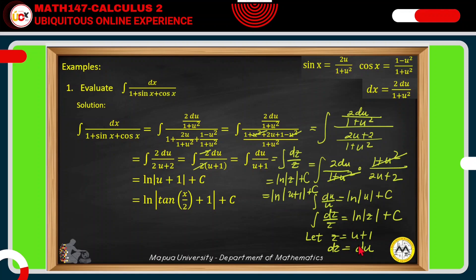We have the natural log of u plus 1 plus C. Recalling that u equals tangent of x over 2, we replace u to get: the natural log of the absolute value of tangent of x over 2 plus 1, plus C. This is the final answer for the integral of dx over 1 plus sine x plus cosine x.